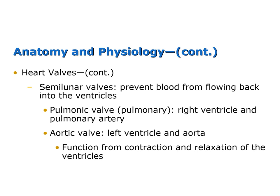Semilunar valves prevent blood from flowing back into the ventricles. They are the pulmonic valve and the aortic valve. The pulmonic valve is located between the right ventricle and the pulmonary artery, and the aortic valve is located between the left ventricle and the aorta. The heart relaxes during diastole and fills with blood. As pressure in the ventricles drops below pressure in the aorta and the pulmonary artery, blood begins to back up towards the ventricles. The pressure of that blood causes the aortic and pulmonic valves to snap shut, producing the second heart sound S2, and the atria begin to fill, starting the cardiac cycle.